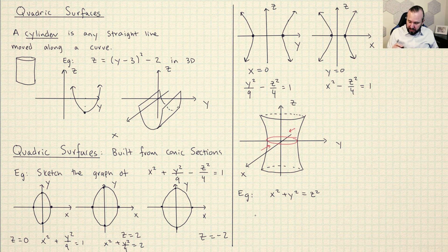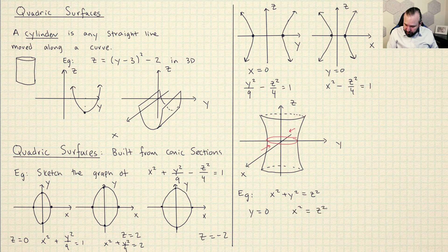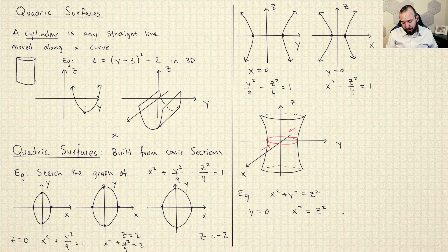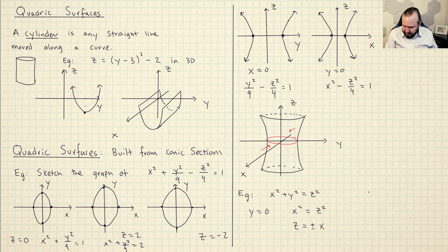But just be careful here. For example, if I pick y is equal to 0, then I get the equation x squared is equal to z squared. Now, if you square root both sides, this is what I'm saying. Don't forget that plus or minus. So you're going to actually get z is equal to plus or minus x.